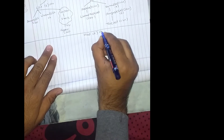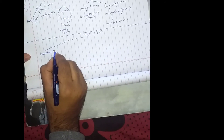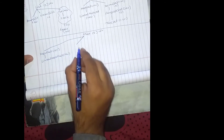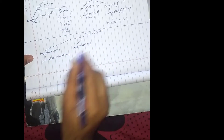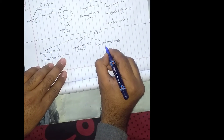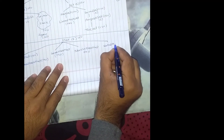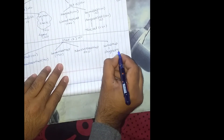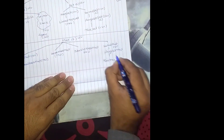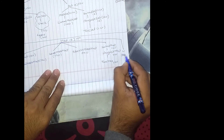Map is not a child interface of Collection — it is a separate interface, introduced in 1.2. Its child classes include HashMap (1.2), LinkedHashMap (1.4), WeakHashMap and IdentityHashMap (both 1.4). It also has SortedMap and NavigableMap (1.6), TreeMap (1.2), and the legacy classes Hashtable and Properties.